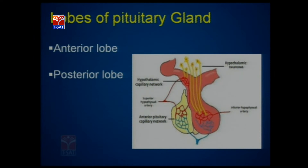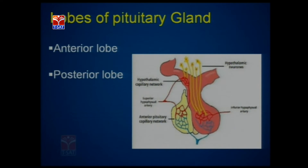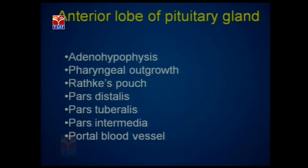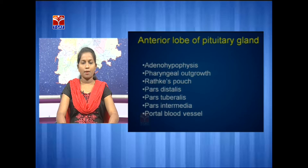The pituitary gland has two lobes: the anterior lobe of the pituitary and the posterior lobe of the pituitary. Here is a diagram where you can see both lobes — the anterior lobe and the posterior lobe. The anterior lobe receives hormones through hypothalamic neurons.